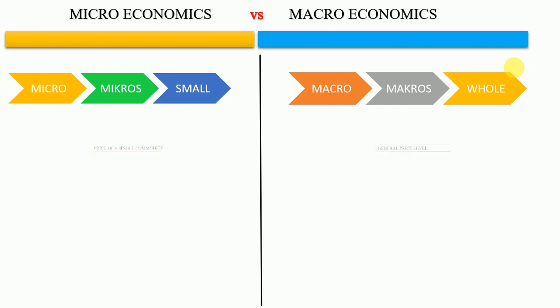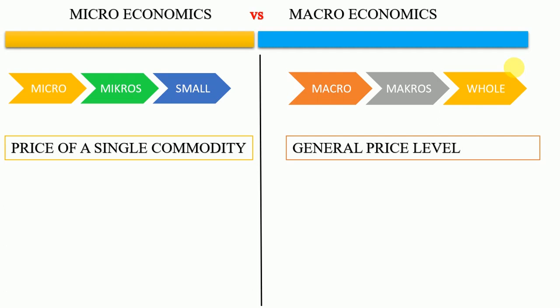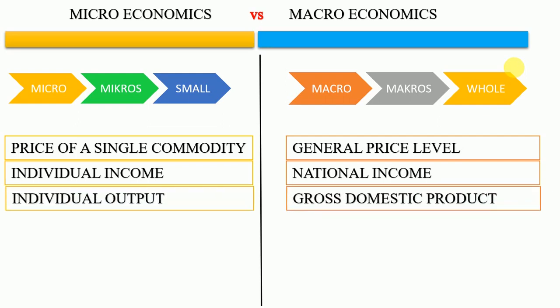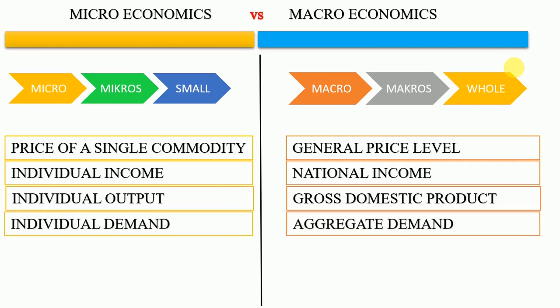For example, microeconomics studies the prices of a single commodity whereas macroeconomics studies the general price level, which is the combination of prices of all commodities in the market. Microeconomics deals with the income of a single family or individual income, while macroeconomics deals with the national income or the total income of the nation. Microeconomics deals with the output produced by a single firm, but macroeconomics deals with the total output of a nation — the gross domestic output or aggregate output. Similarly, microeconomics deals with individual demand whereas macroeconomics deals with aggregate or market demand.